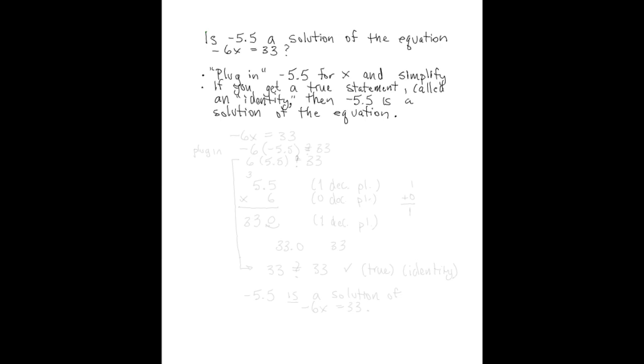If we get a true statement called an identity, then the value we plugged in, -5.5, is a solution of the equation. If we don't, if we get something that is a false statement, then we call that a contradiction. So let's see what happens here. We've got -5.5 that we're going to plug in for x.